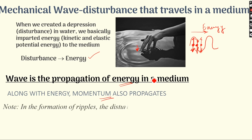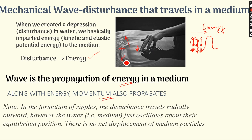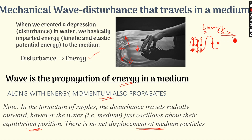When ripples are formed, the disturbance travels radially outward. But the water particles, which are the medium, just oscillate about their mean position or equilibrium position. The net displacement of these medium particles is always zero. Once the wave has traveled forward and gone, the particle comes back to its original form. So the net displacement of the particle with respect to its initial state is zero — particles do not travel. The medium particles' net displacement is zero, but the wave displacement is in the forward direction.